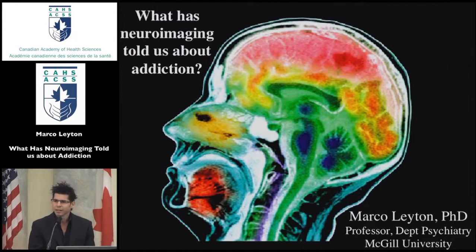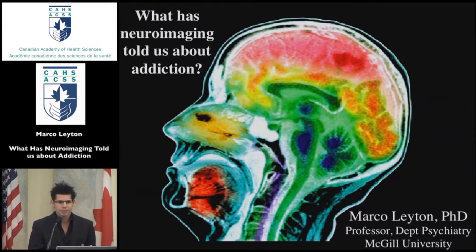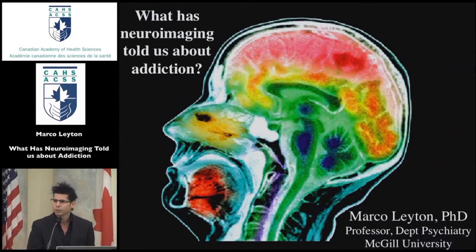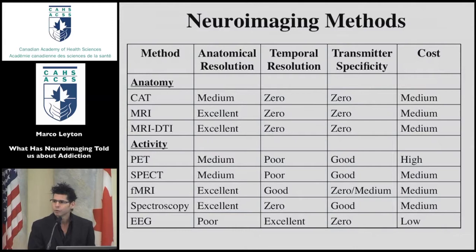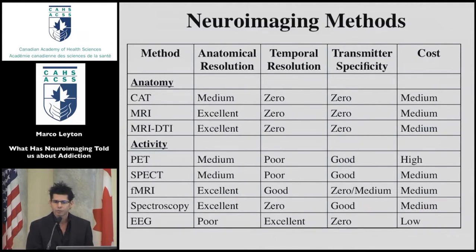What I've been asked to talk about today is the neuroimaging literature — to provide some sort of overview of what's been found, and particularly how it might be relevant for our understanding of addictions. The last 15 to 20 years have been a particularly exciting period for those of us in the neuroimaging community, a period of developing a wide range of new tools that we can use, improving anatomical, temporal, and neurochemical resolution.